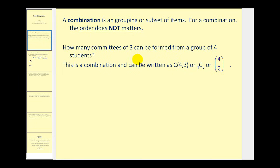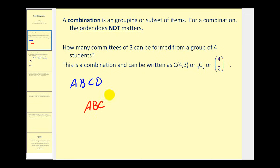Let's go and see if we can model this situation. Let's call the four students A, B, C, D and see how many groups of three we can form using these four letters. Well, the first group might be A, B, C. Changing the order of these three will not create a new committee, which is the big difference between a combination and a permutation — here the order does not matter.